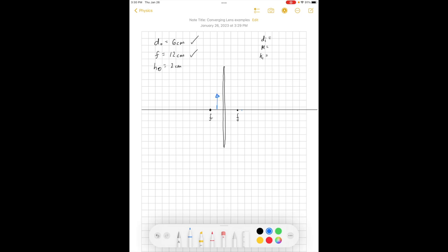That'll represent our object. If that represents 6 centimeters away, then the focal length is 12 centimeters away. And it has a height of, we'll call that 2 centimeters.